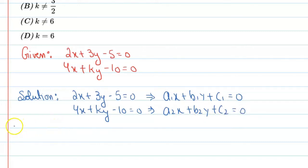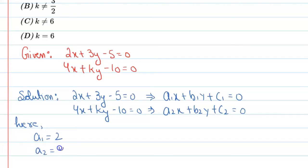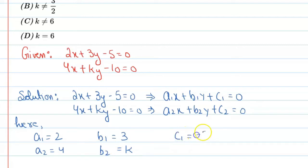So we can identify the coefficient values. Here a1 = 2, a2 = 4, b1 = 3, and b2 = k. Also, c1 = -5 and c2 = -10.